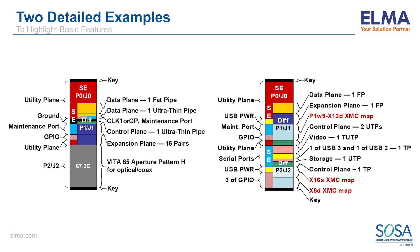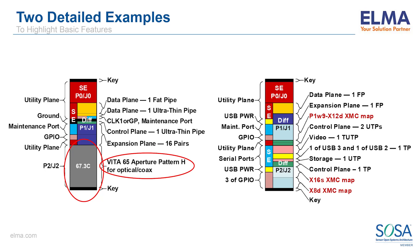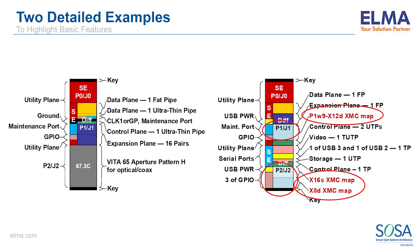Looking more closely at the primary payload and IO Intensive 3U profiles, we see certain commonality as well as the differences between the two. Both have data plane, control plane, and expansion plane ports, although of different sizes and counts. However, the payload profile has the previously mentioned aperture for blind-mate optical and coaxial modules, while the IO Intensive profile has pins for mezzanine-mapped I/O. With a limited number of pins to work with in 3U, it was important to optimize functionality for specific types of slots. For instance, it is natural for a single-board computer to have lots of standard I/O and to host I/O mezzanine cards, while a receiver or transceiver may have no need for these ports but would require multiple coaxial connections.